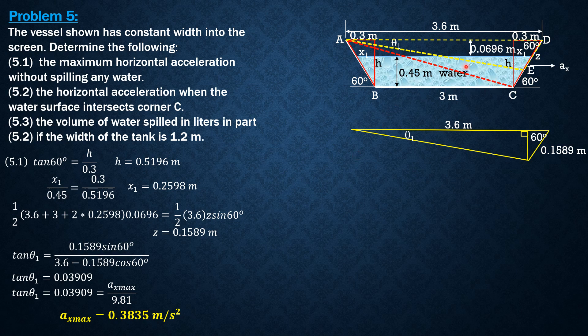It should be greater than this value and certain amount of water will be spilled, so the surface will cross C and of course A because some of the liquid has been spilled. So this is the surface and the angle here is called theta 2. This is also theta 2. So we can compute tangent of theta 2, it equals h over